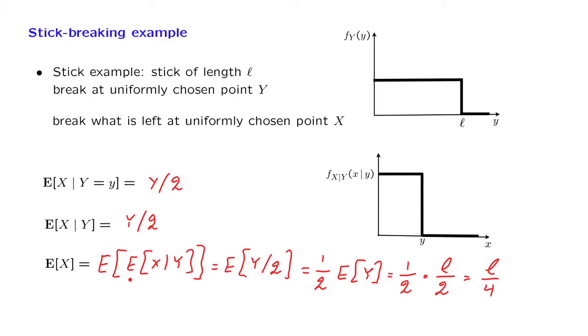And what is important to appreciate from this example is the distinction between these two lines. This is an equality between numbers, which is true for any specific little y, whereas this is an equality between random variables. This quantity is random and this quantity is also random, meaning that their values are not known until the experiment is carried out and the specific value of capital Y is realized.